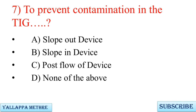Question 7: To prevent contamination in TIG welding — A. Slope out device, B. Slope in device, C. Post flow device, D. None of the above.